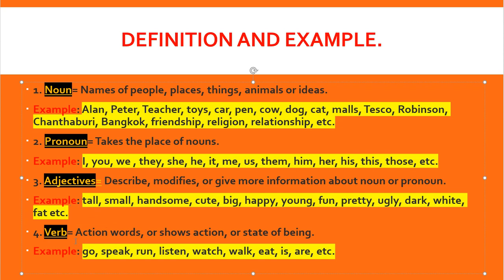Number four, verb — action words or words that show action or state of being. That is the one where you do something or move. For example, you speak — now I'm speaking, so I do action, that is a verb. Run, do a lesson, watch — if you're watching, that is action. Walk and eat. Also, 'is' and 'are' are B verbs for singular and plural. We have 'is' for singular and 'are' for plural. The verb has many types, but here we discuss the basics.